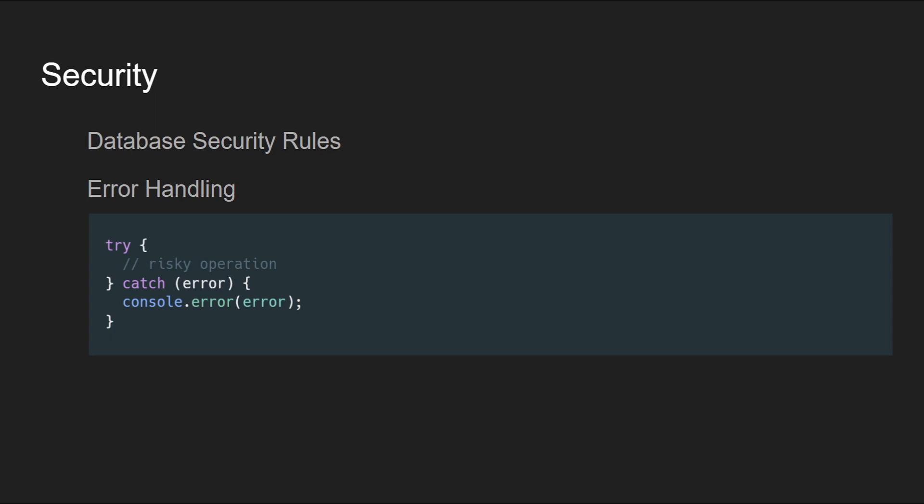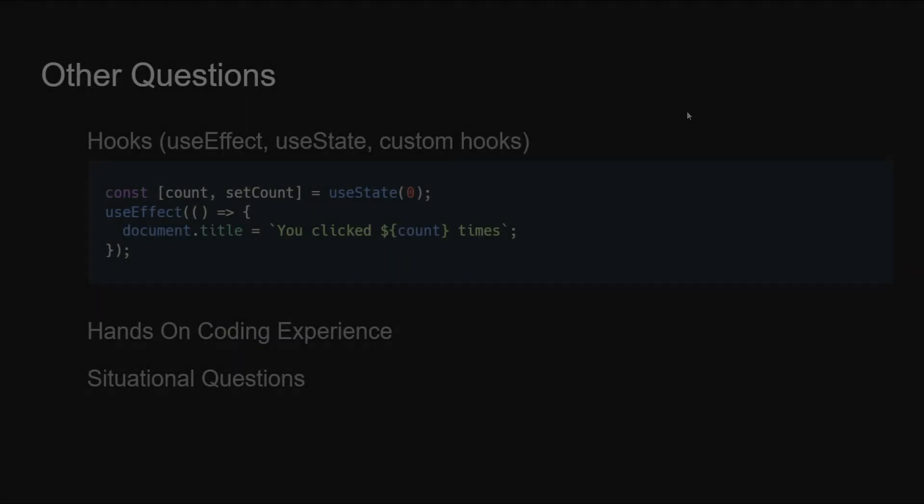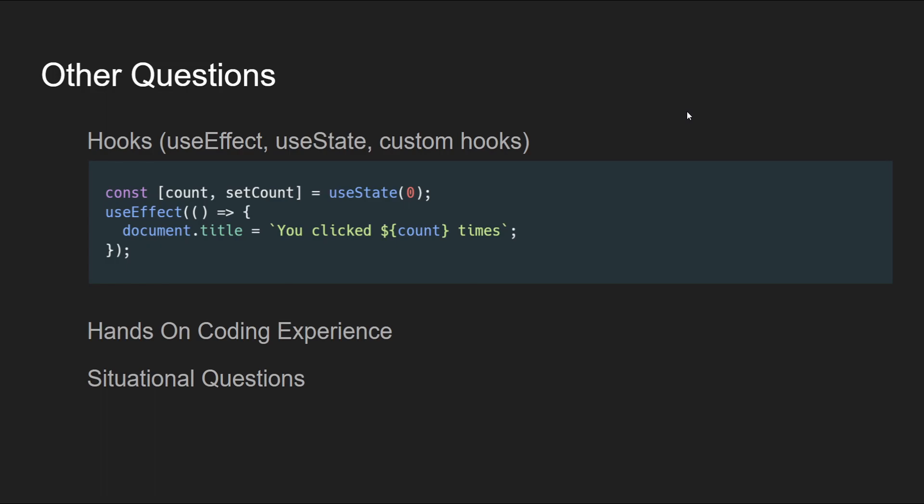Next is error handling — effective error handling strategies to manage and catch exceptions, preventing application crashes and potential security vulnerabilities. In React you can do this in primarily two ways: first by using an error boundary, and second by using custom error handling, preferably with error handling hooks.